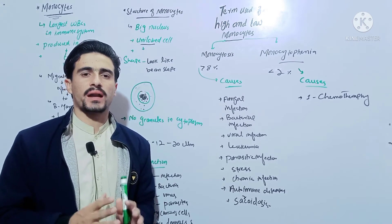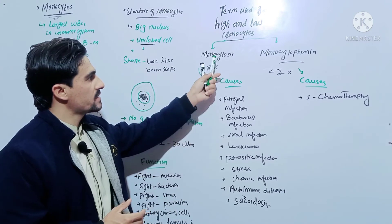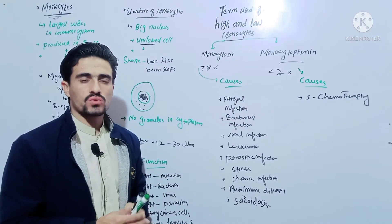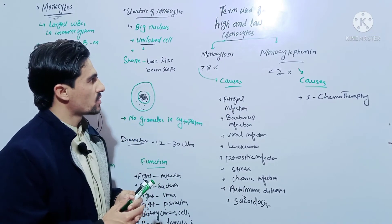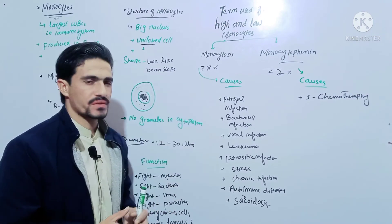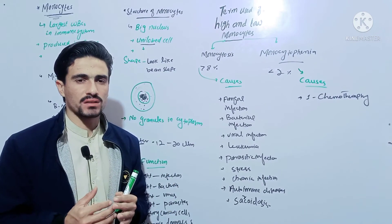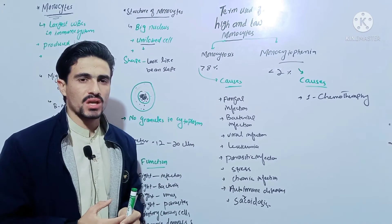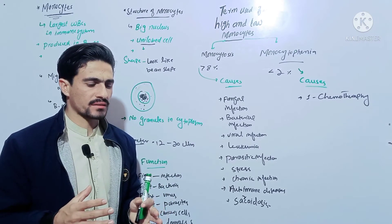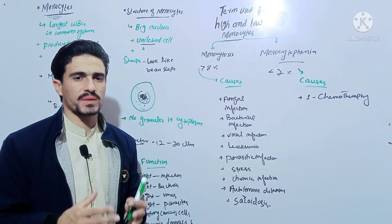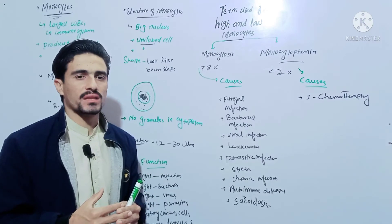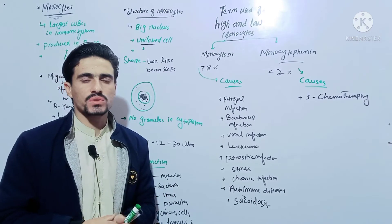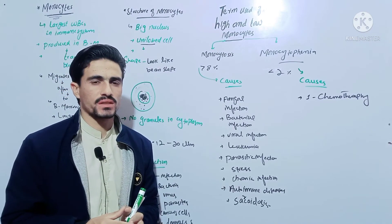Now come to the terms used for high and low monocytes. There are two basic terms: monocytosis and monocytopenia. In monocytosis, the monocytes are increased from their normal range — greater than 8 percent. When monocytes are greater than 8 percent, that condition is called monocytosis.